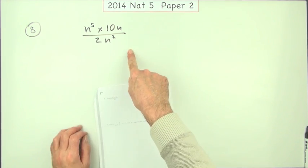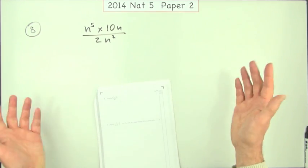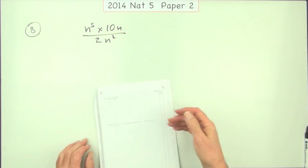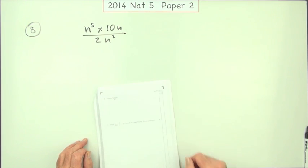Now this is a question where if you state the correct answer without any working you'll get three out of three, and you can because you can just look at that and see the answer straight away. Three marks in as many seconds.